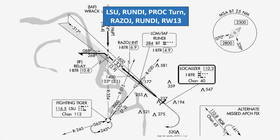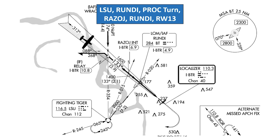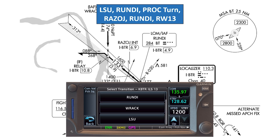This question is another way of asking how this approach will be performed. We're going to be doing a procedure turn on this one. Starting from the LSU VOR, we take a feeder route, identified by the boulder line and arrow, to the initial approach fix, Rundi. Then we fly outbound and execute the procedure turn as depicted. Once established inbound, we pass Razaj, Rundi, and then arrive at the missed approach point, the runway threshold. Here's what the whole sequence looks like on the GTN 650.